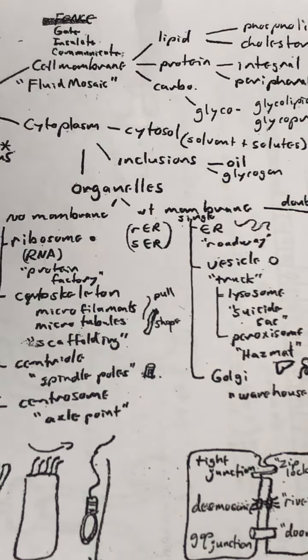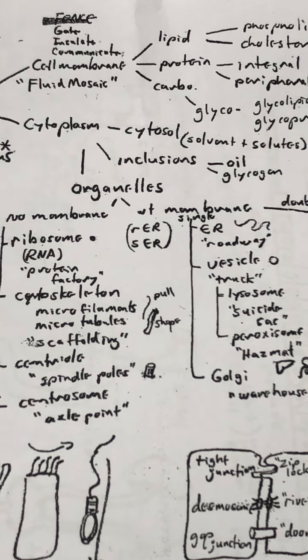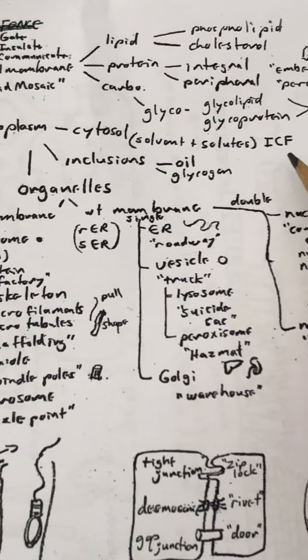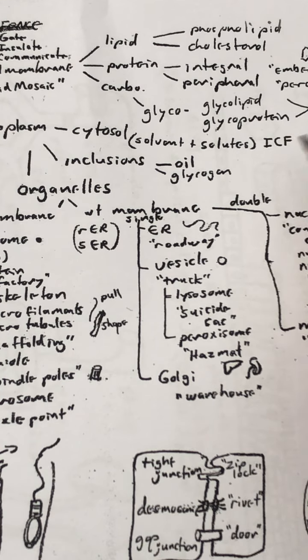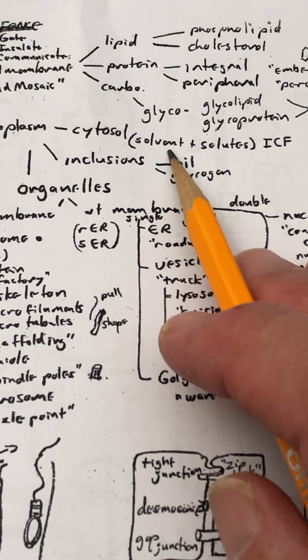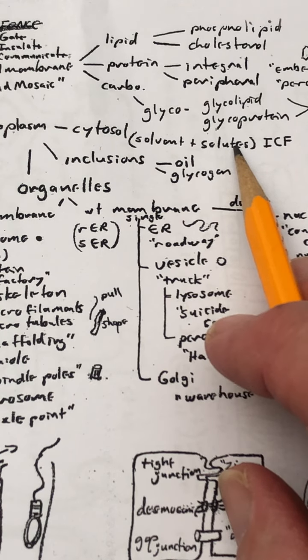Cytosol is the fluid, the solution inside of the cell. You could call it intracellular fluid. And it is made up of a solvent, water, and all the solutes dissolved inside of it.